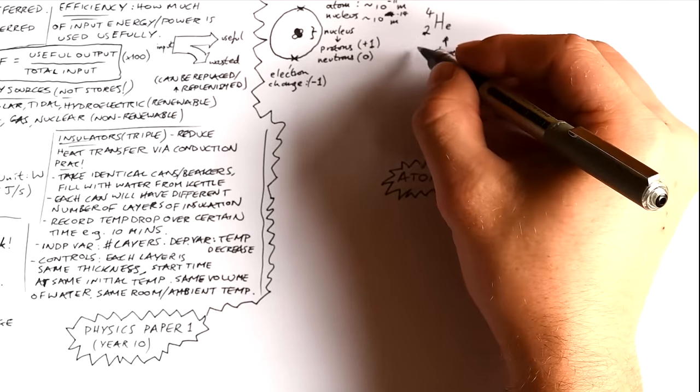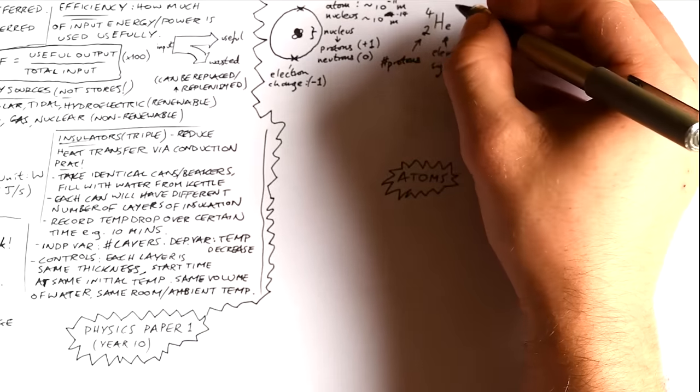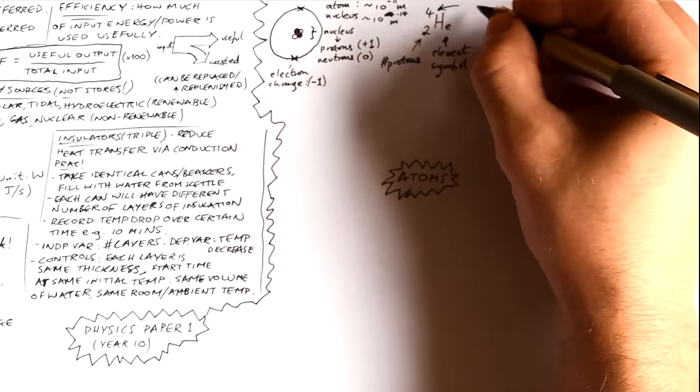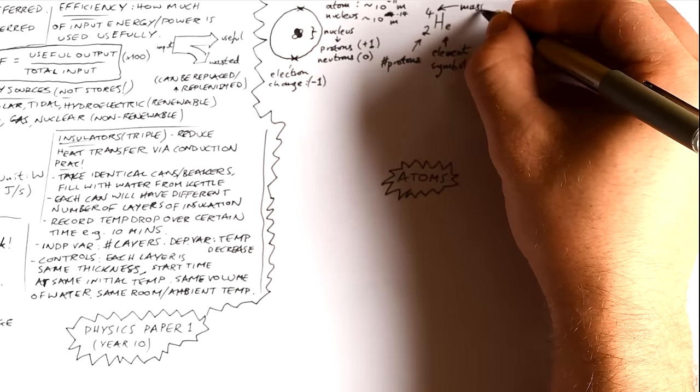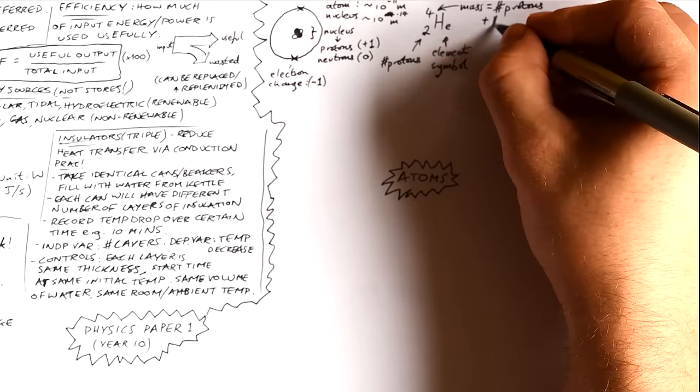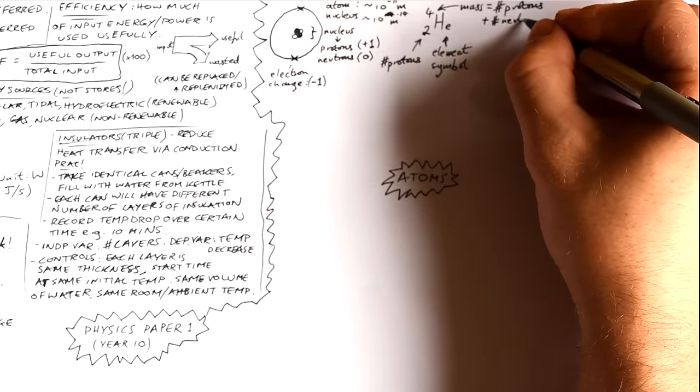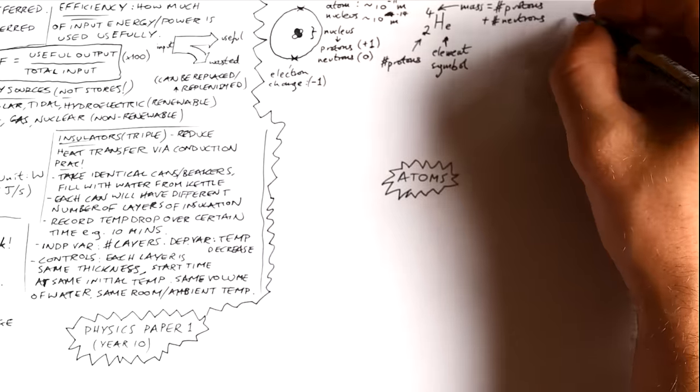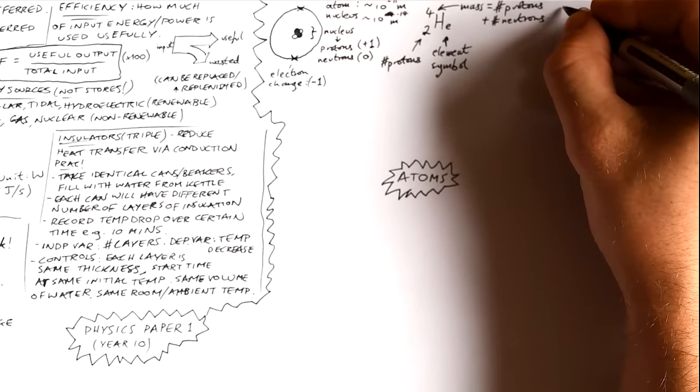Okay, here's how we write the symbol for an atom or an element. We have the actual symbol itself. For helium, it's He. The bottom number is the number of protons. Yes, that's going to be the same as the number of electrons as well, if it's an atom, as opposed to an ion. The top number is massive, so therefore it's the mass number. That's the number of protons plus the number of neutrons. And of course, to get the number of neutrons, just take one away from the other.